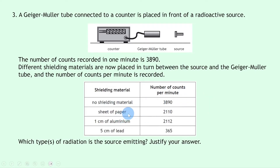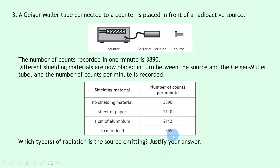When a single sheet of paper is placed between the source and the tube, we get 2,110 counts per minute. When one centimetre of aluminium is placed between the source and the Geiger-Müller tube, we get 2,112. And when five centimetres of lead is placed between the source and the tube, we get 365 counts per minute. The question asks which type or types of radiation the source is emitting, and asks us to justify our answer.